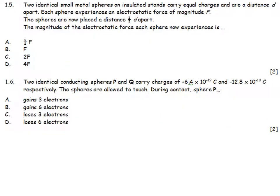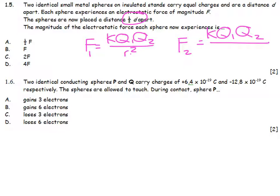Two identical small metal spheres on insulated stands carry equal charges and are a distance D apart. Each sphere experiences an electrostatic force of magnitude F. They are now brought to half D. So I'm going to go F is equal to KQ1Q2 over R squared. This is my starting force, that was initially. Now we've got a new situation with the exact same two charges and they are now a half D apart. So this was a D, half D, and I have to square all of that.